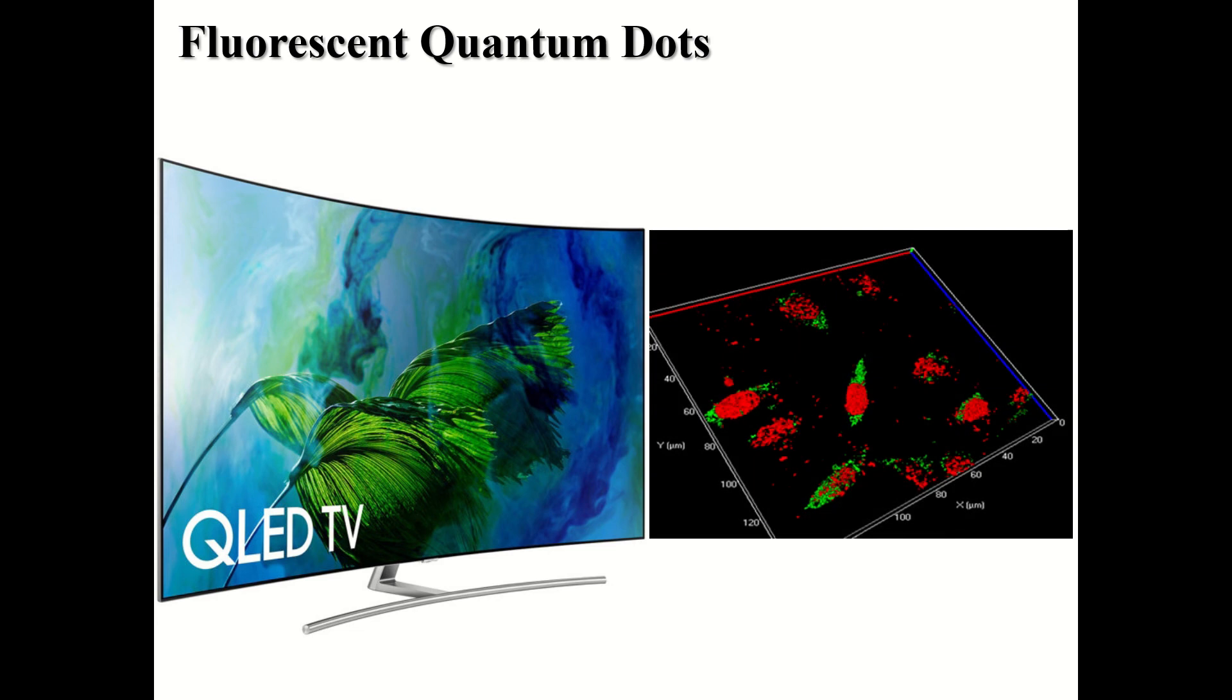You can also do bioimaging with these, and this is another example out of my research lab, where you see us staining cancer cells with quantum dots. And the reason that this is useful is that the quantum dots never photobleach. Dyes photobleach, they'll photobleach within minutes, but my quantum dots never do. So you can study biological processes much longer.